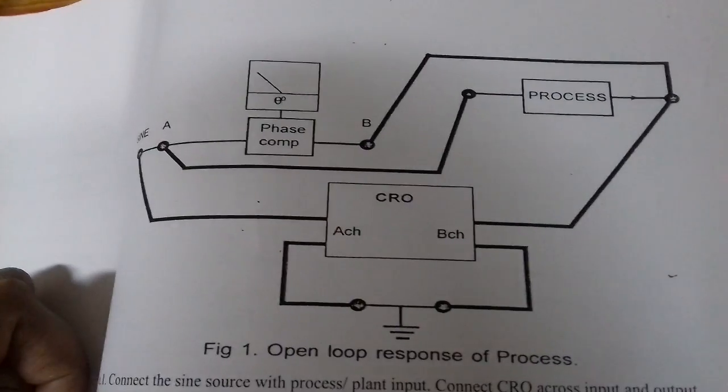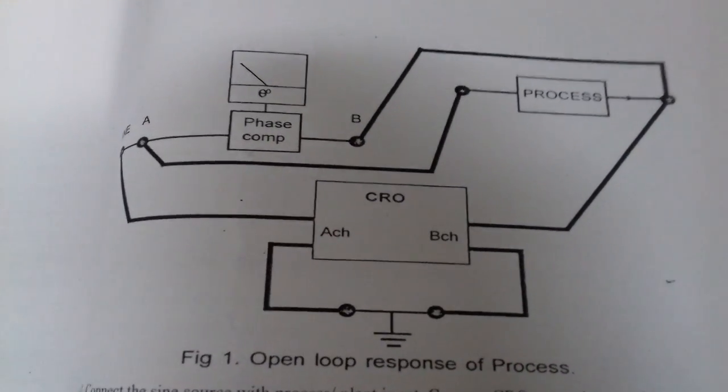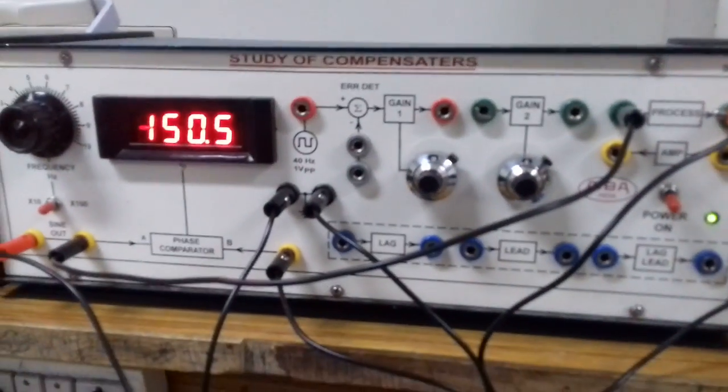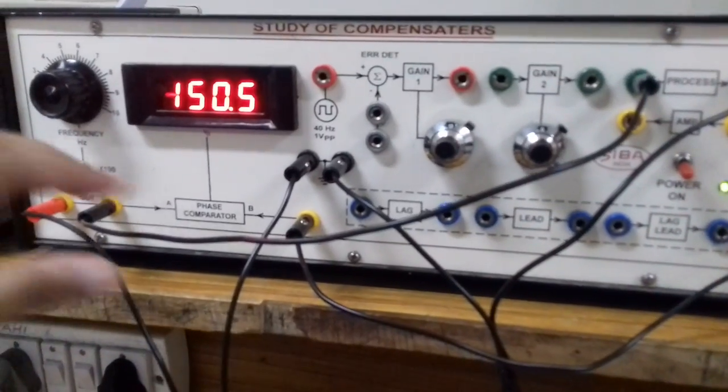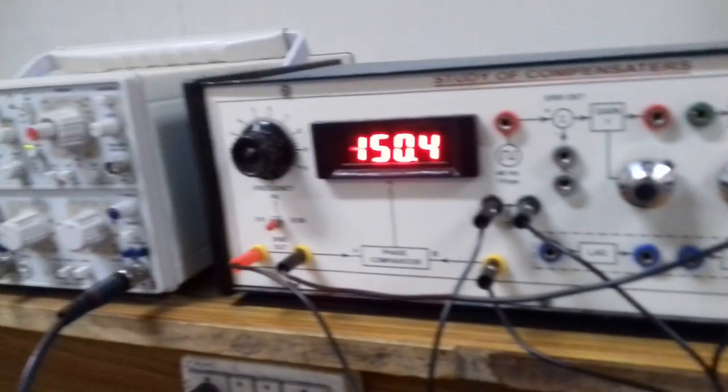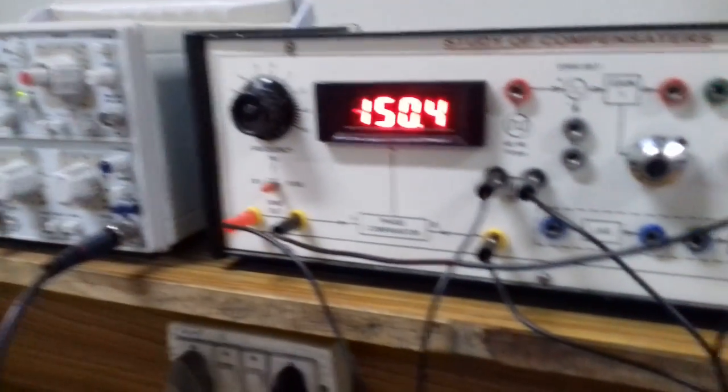The first part of this experiment is the characteristics of open loop response of the process. This we are doing for an uncompensated system. As you can see, the input has been connected to the process here, then the output of the process is going to the CRO. The input is also being seen at the CRO on one of its channels.